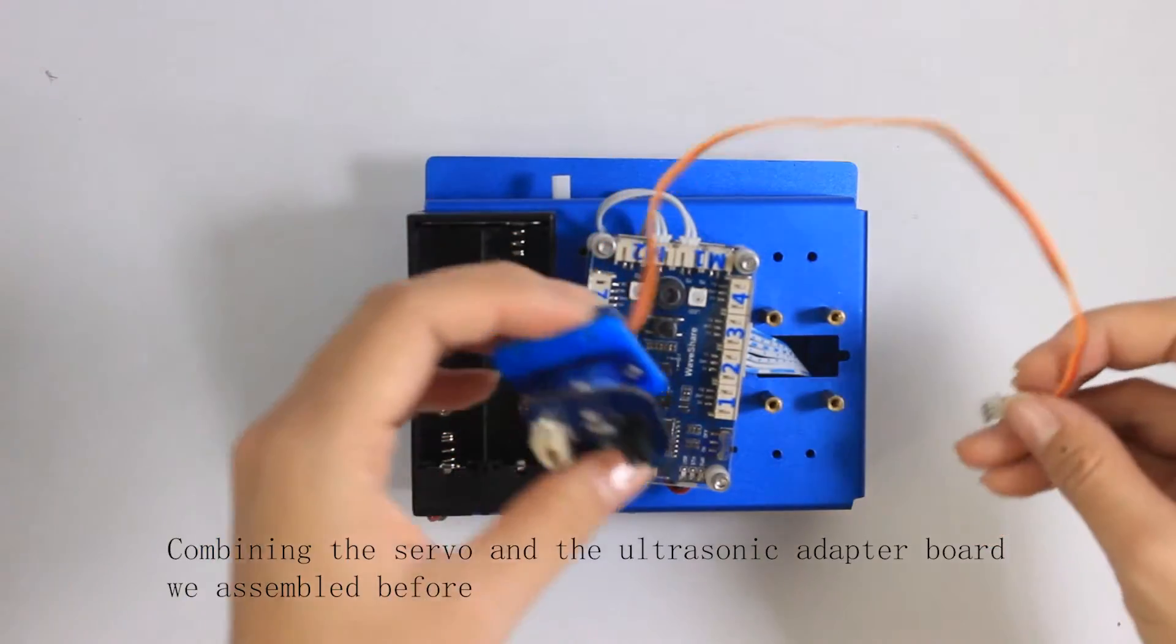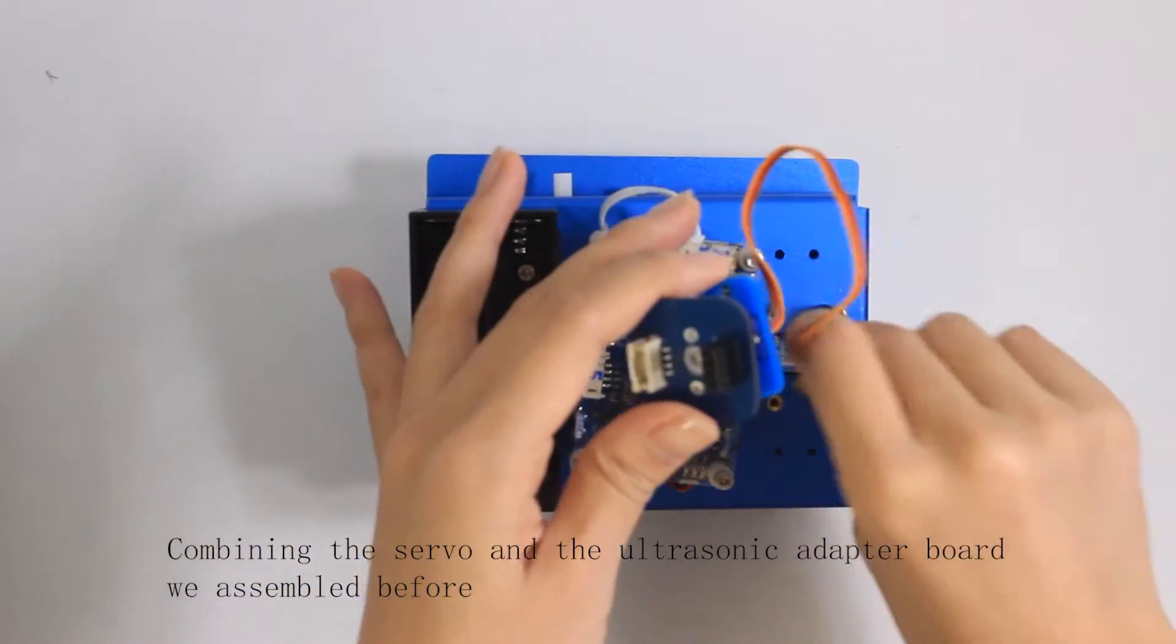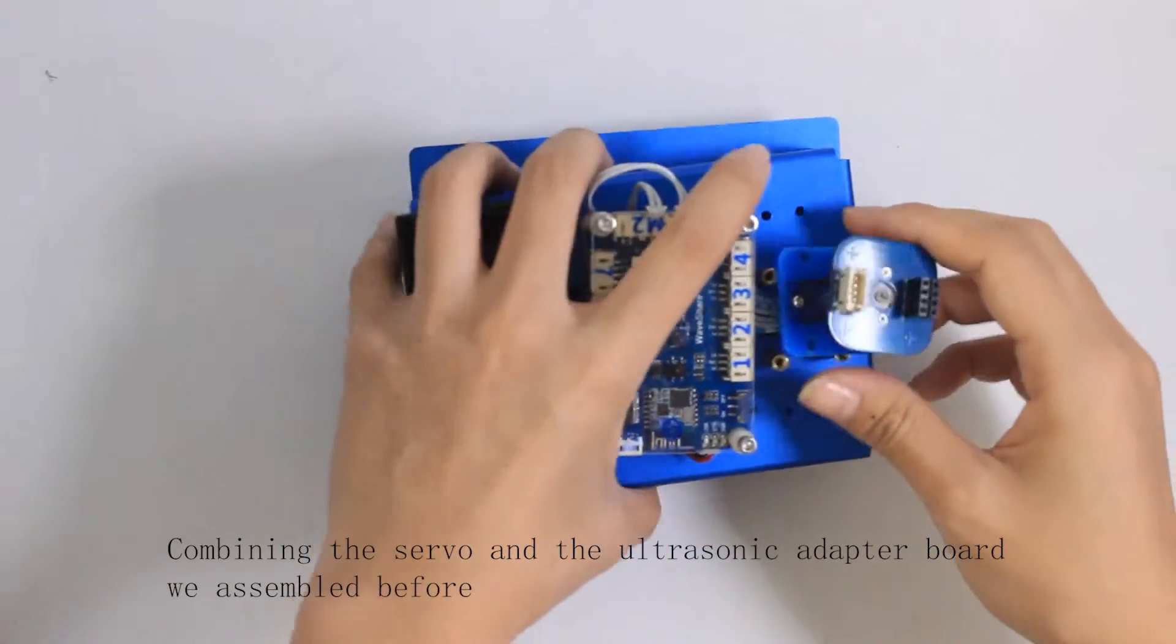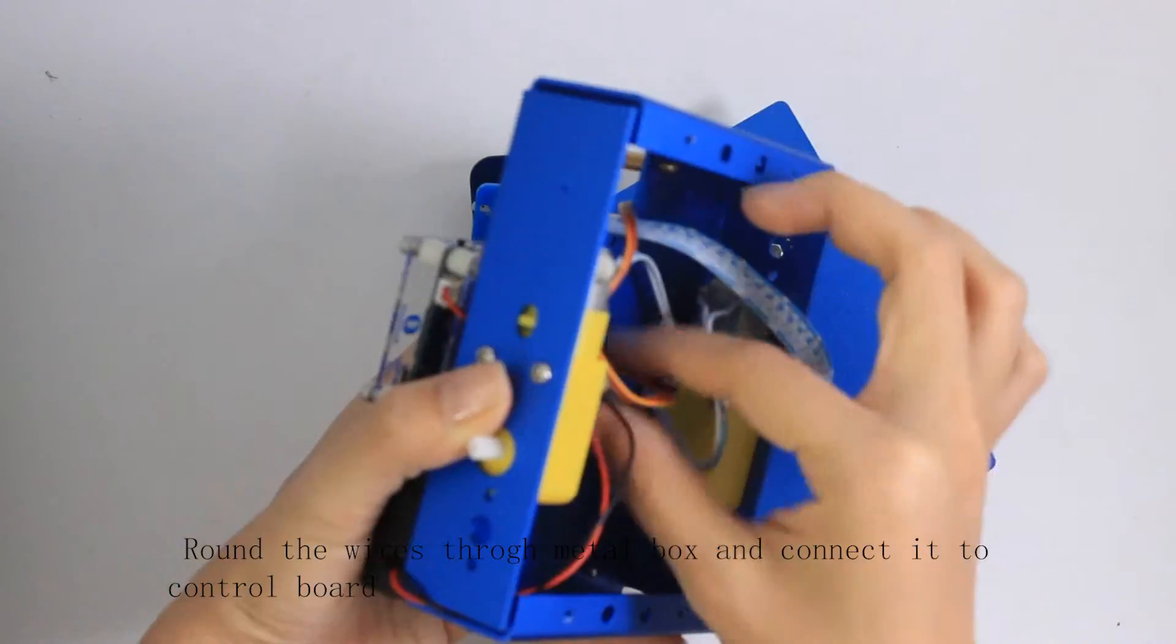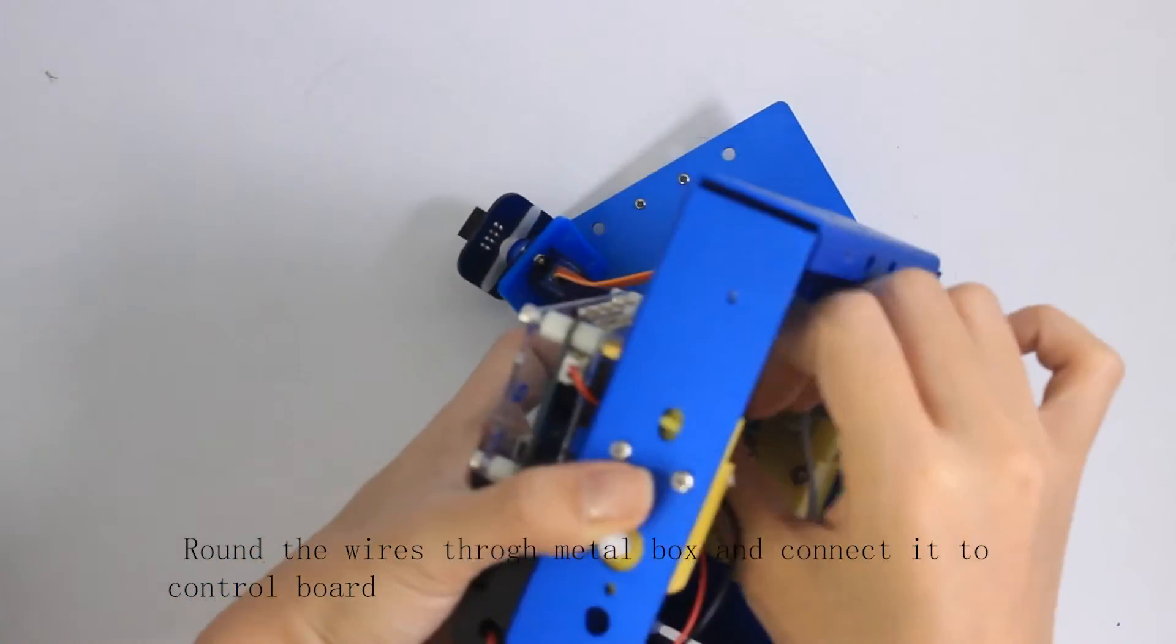Combining the servo and the ultrasonic adapter which we assembled before. Route its wires through metal box and connect to control board.